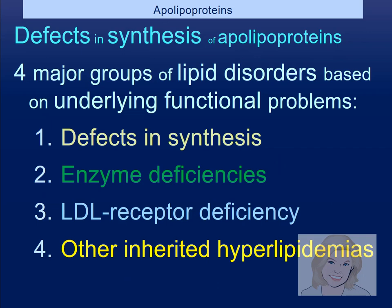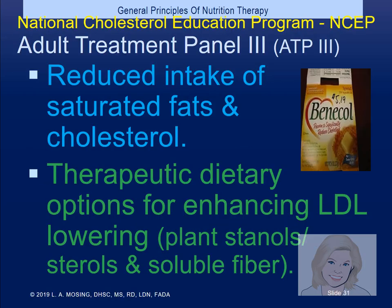If we're investigating a family history of heart disease, we can look for defects in making apolipoproteins. There are four major groups of lipid disorder based on underlying functional problems: defects in making apolipoproteins, enzyme deficiencies, LDL receptor deficiencies, or other inherited hyperlipidemia. Hyperlipidemia — too much lipid in the blood — is often the catch-all phrase you see in medical charts for someone who has high cholesterol.